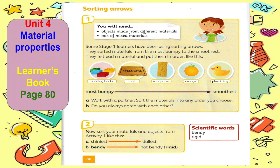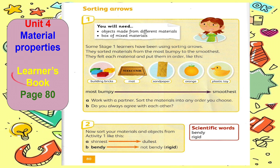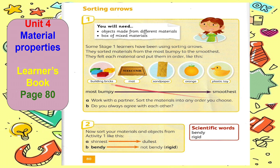You also have learned about different textures of materials, and now we will sort these materials into groups of different textures. In your learner's book, page 80, Sorting Arrows — some Stage 1 learners have been using sorting arrows. They sorted materials from the most bumpy to the smoothest. Using their sense of touch, they felt each material and put them in order like this.